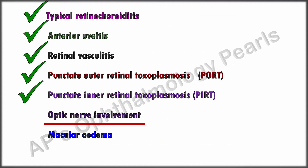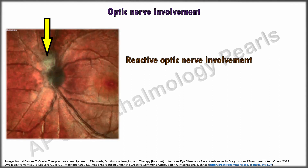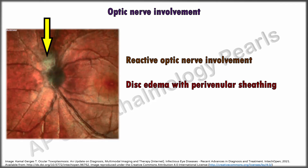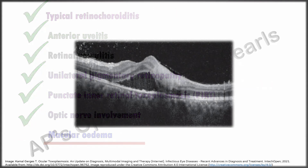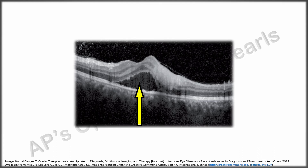Optic nerve involvement may be due to reactive inflammation from a juxtapapillary retinitis or true nerve involvement from parasitic invasion, showing disc edema with venular sheathing. Retinal lesions may be absent and neuroretinitis can also occur. Macular edema can be in the form of subretinal fluid adjacent to a macular retinochoroidal lesion, cystoid macular edema, or rarely a large outer retinal cyst.